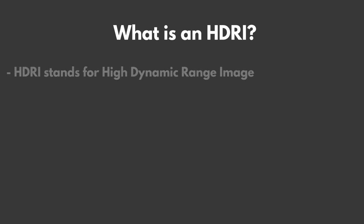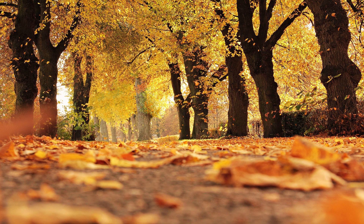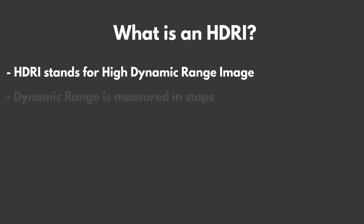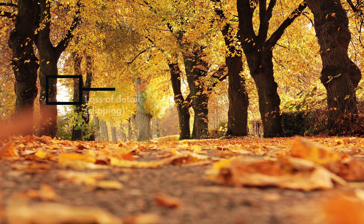HDRI stands for High Dynamic Range Image. Dynamic range is simply the difference between the lightest and darkest areas in an image. This is measured in stops. A higher dynamic range means a better looking image, with less loss of detail from high or low brightness areas.